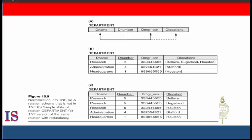Of the three solutions, the first is generally considered to be the best because it does not suffer from redundancy and is completely general — there is no limit on the maximum number of values. You could have one department or a hundred, one location or a hundred; it wouldn't matter. In fact, if we choose the second solution, it will be decomposed further during subsequent normalization steps back into the first solution.